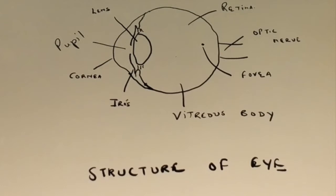Light passes through an opening called the pupil, and the pupil is regulated by a tissue called the iris.